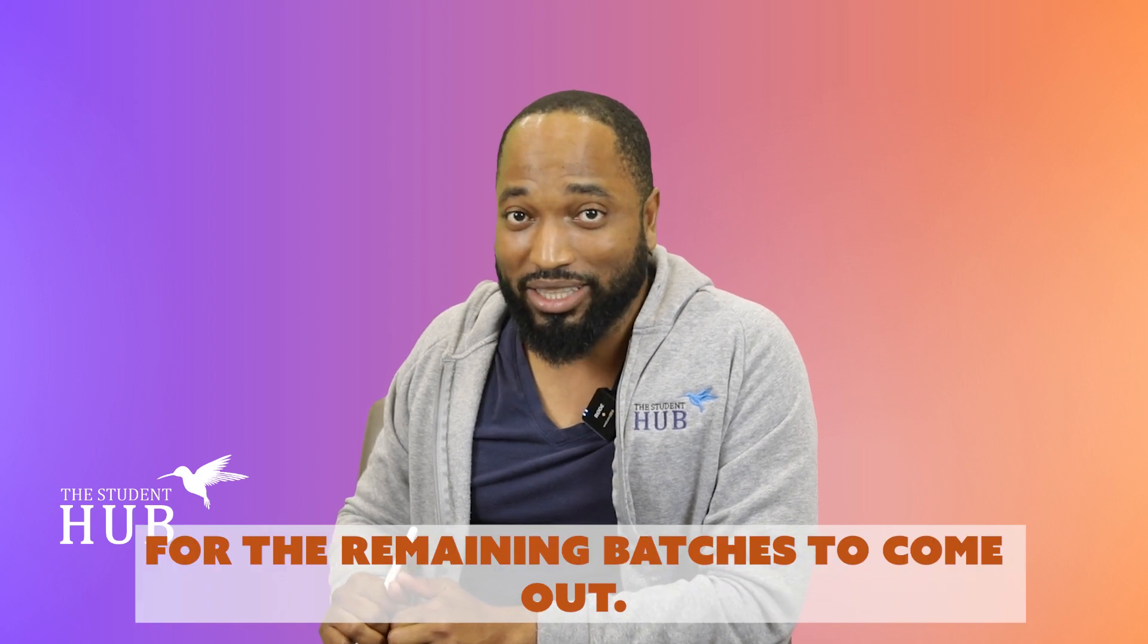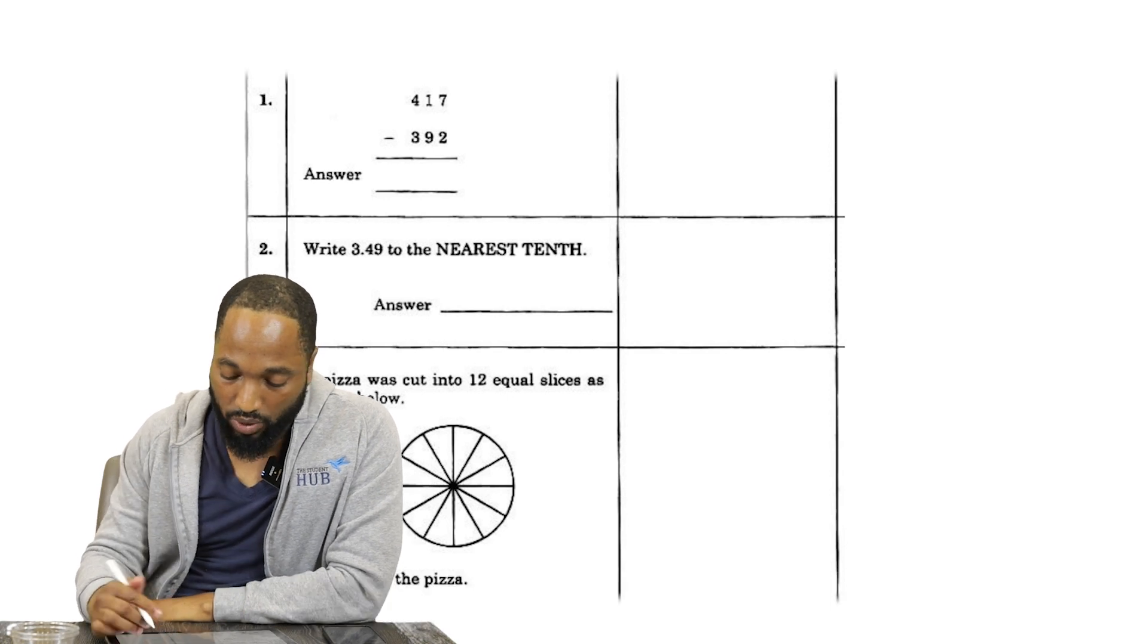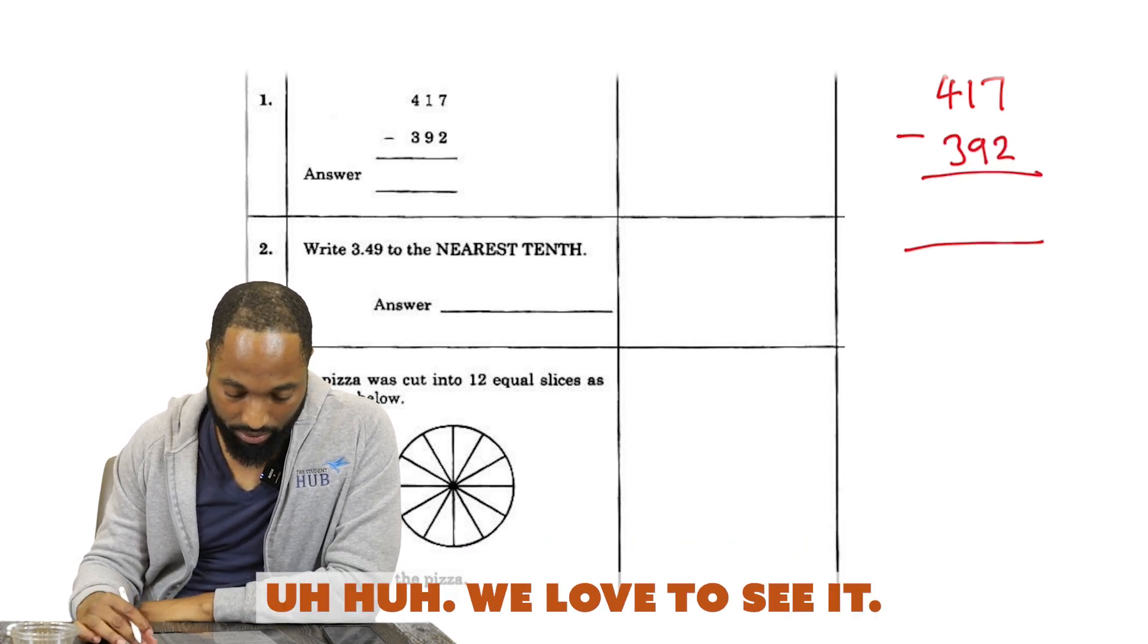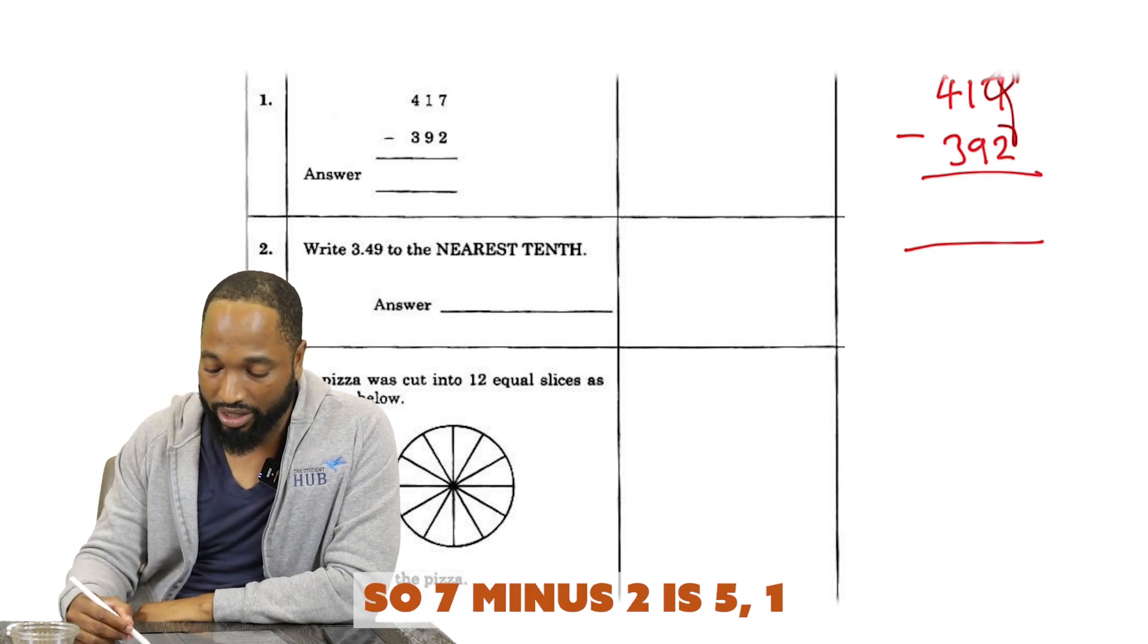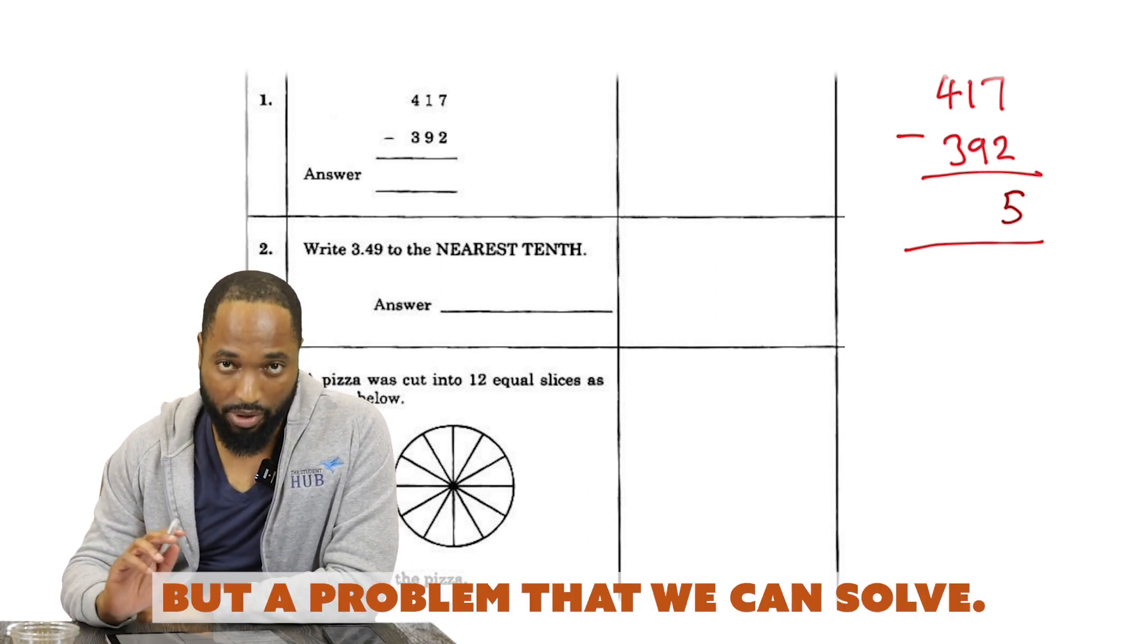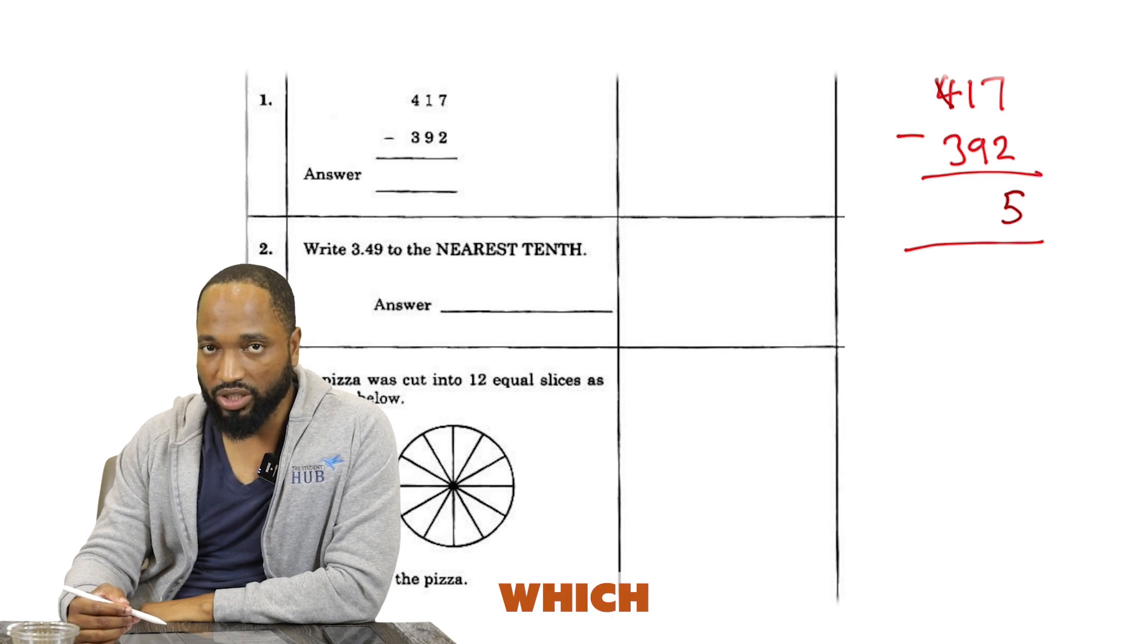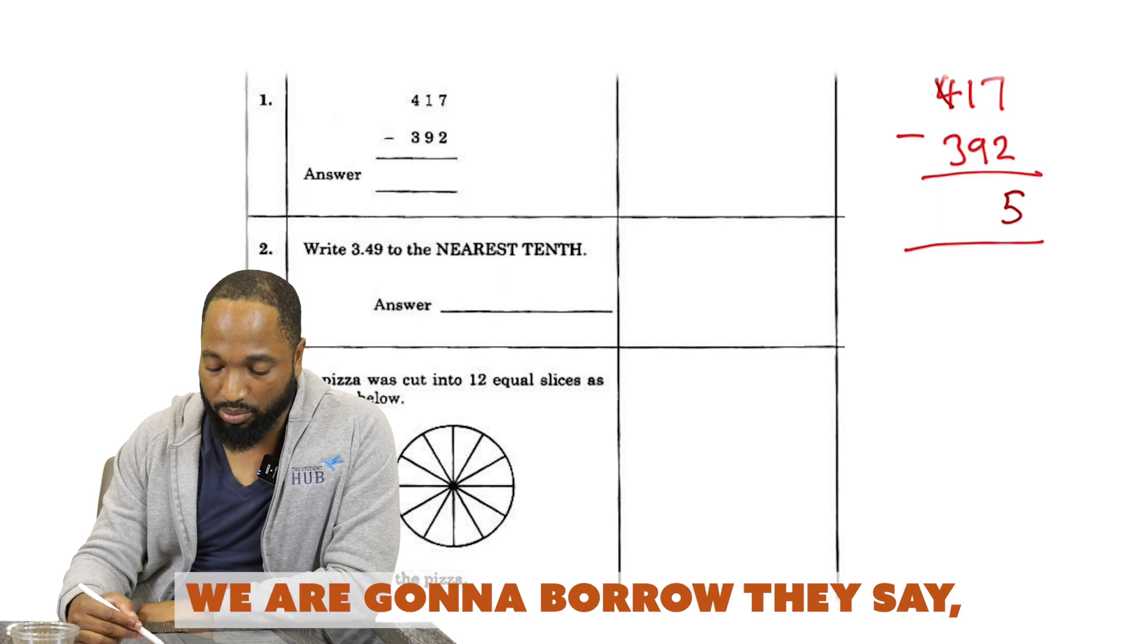Okay, so 417 minus 392. I hope you are getting smarter in this thing called mathematics. Here we are doing a nice beautiful subtraction. When you subtract, you subtract in place value. So seven minus two is five, one minus nine is a problem, but a problem that we can solve.